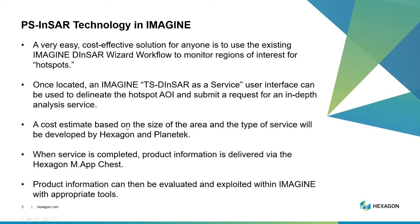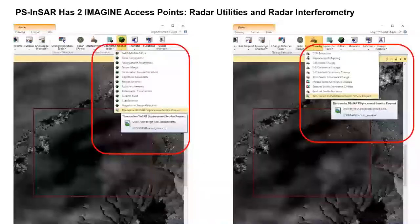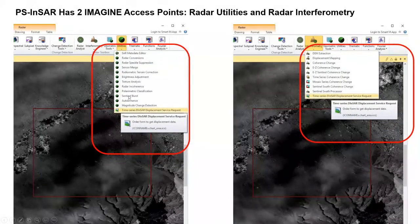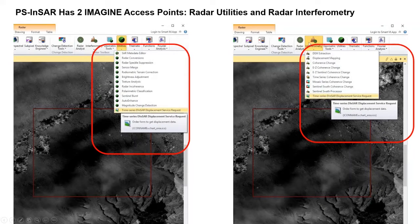They're going to look at your area of interest and make a cost estimate. If you have a study done, you'll get the information back as a shapefile delivered to you, or you can use tools online to analyze your data. I've integrated this access point into a couple of different drop-down lists in Imagine — under radar utilities as a time series displacement service request, and also under the interferometry drop-down list. This is not a function you run; this is a request for a service.